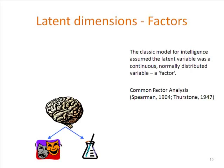The classic model for a latent variable is intelligence, and this was originally formulated — and still almost always formulated now — as a latent, normally distributed variable. These things are often called factors, hence factor analysis is one way you can get at them. If we were to take the whole population and plot out what we thought their intelligence score was — from very low to very high — this model assumes it would follow a normal distribution bell curve, where most people have average intelligence, some have very low, and some have very high intelligence.